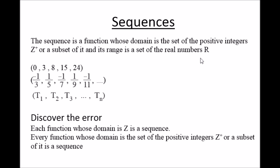The range is a set of real numbers. Now an example: here we have a statement and you need to discover the error. 'Each function whose domain is a set of integers is a sequence.' This is incorrect — the domain includes negative integers and zero, but the domain of a sequence must be positive integers. The correction is: every function whose domain is the set of positive integers Z⁺ or a subset of it is a sequence.